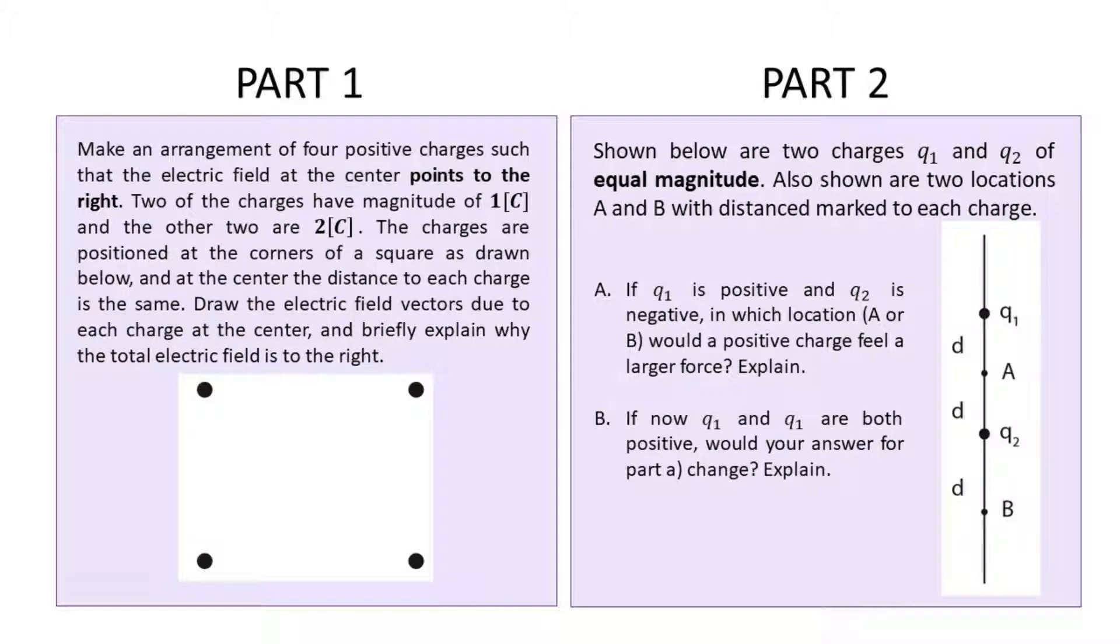make an arrangement of four positive charges such as the electric field at the center points to the right. Two of the charges have a magnitude of one coulomb and the other two are two coulomb. The charges are positioned at the corners of a square as drawn below and at the center, the distance to each is the same. Draw the electric field vectors due to each charge at the center and briefly explain why the total electric field is to the right. Part two,